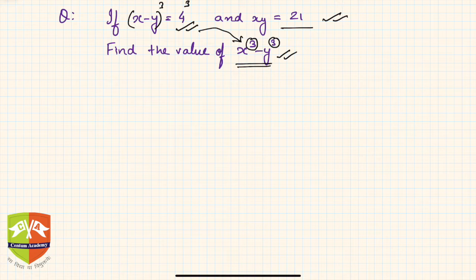We have been given x minus y equals 4, so raising both sides to power 3 will get x minus y whole cube equals 4 cube. Very good.